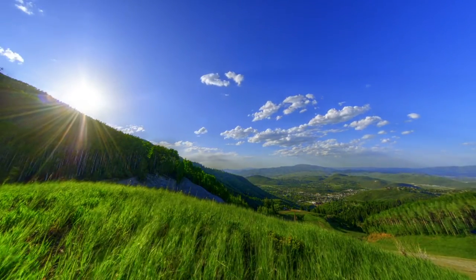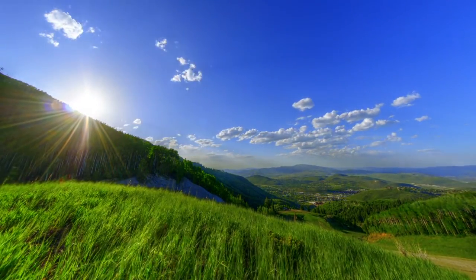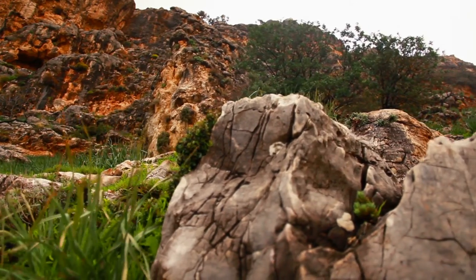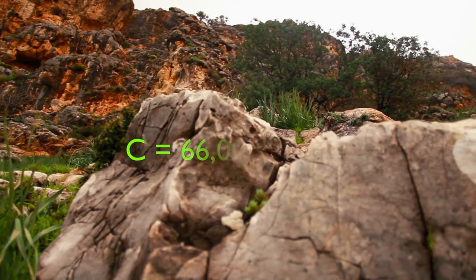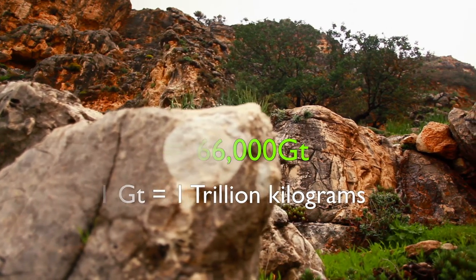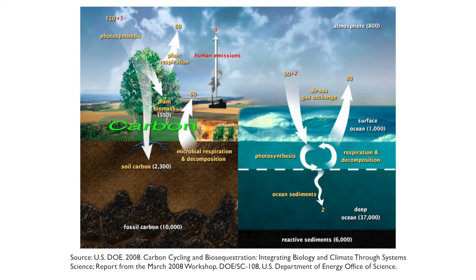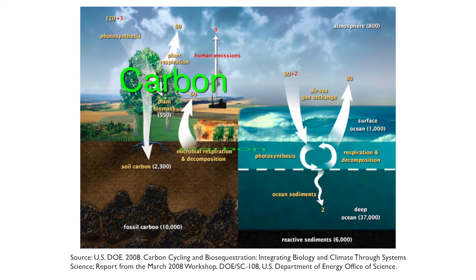Carbon is all around us. It is the fourth most abundant chemical element in the universe, behind hydrogen, helium, and oxygen. The biggest reservoir of carbon is stored in rocks — approximately 66,000 gigatons, with one gigaton equal to one trillion kilograms. The second biggest reservoir is the deep ocean, and the third largest is fossil fuels. The atmosphere and the surface ocean are the smallest carbon reservoirs, but possibly the most important. Carbon is moving between these reservoirs constantly because of a variety of chemical and biological processes. This is known as the carbon cycle.